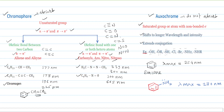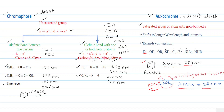Examples of auxochromes are hydroxyl (–OH), alkoxy (–OR), thiol (–SH), halides (Cl, Br), and amine (–NH₂). These groups have lone pairs and therefore act as auxochromes. For example, benzene has a λmax of 254 nm. When NH₂ is attached, the electrons are available for resonance, extending conjugation. As conjugation increases, λmax increases — so aniline has a λmax of 280 nm.